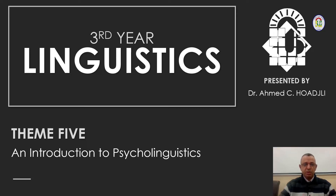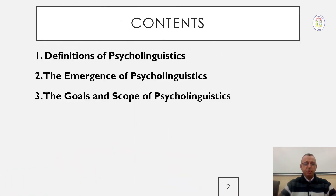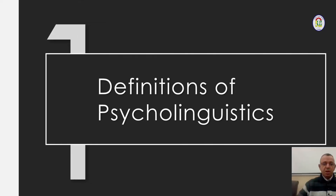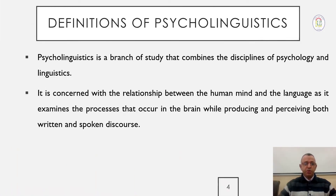This is going to be the core of the second section of the third year syllabus. Theme five will be an introduction to psycholinguistics. In this theme we shall cover three main points: first, definitions of psycholinguistics; second, the emergence of psycholinguistics; and third, the goals and scope of psycholinguistics. Psycholinguistics is a branch of study that combines the disciplines of psychology and linguistics.